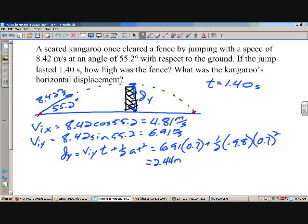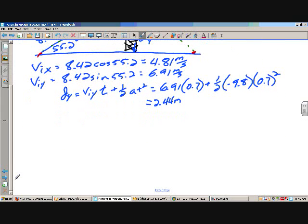Some people use the final velocity squared equals initial velocity squared plus 2ad to figure out what that displacement is. That works too, but your final velocity at that point is zero. That works also, you get the exact same answer - 2.44 meters.